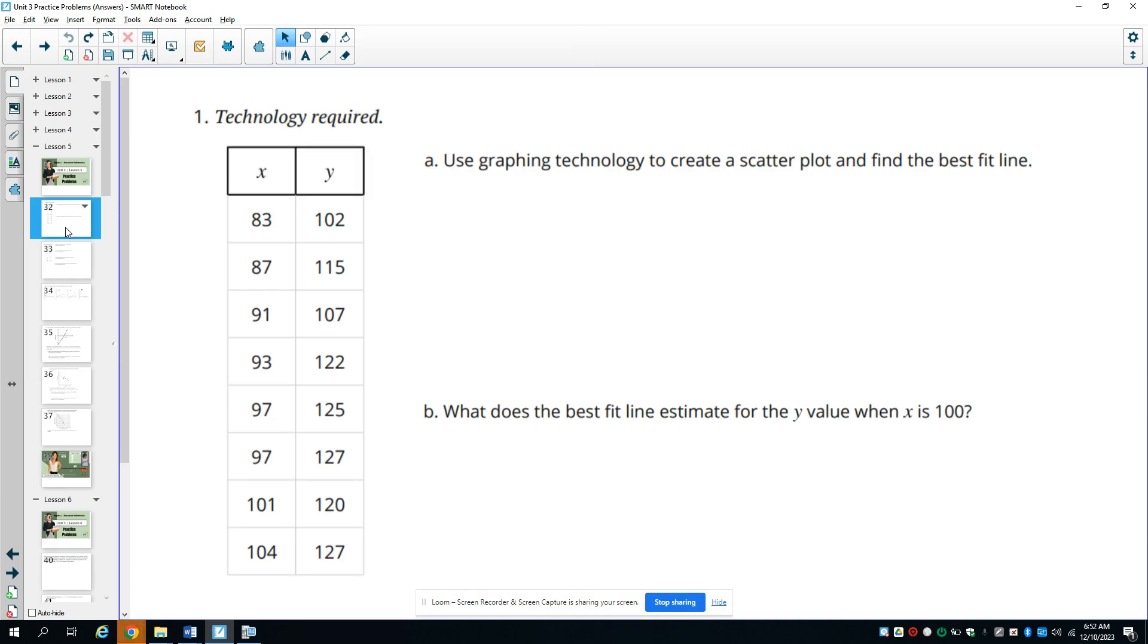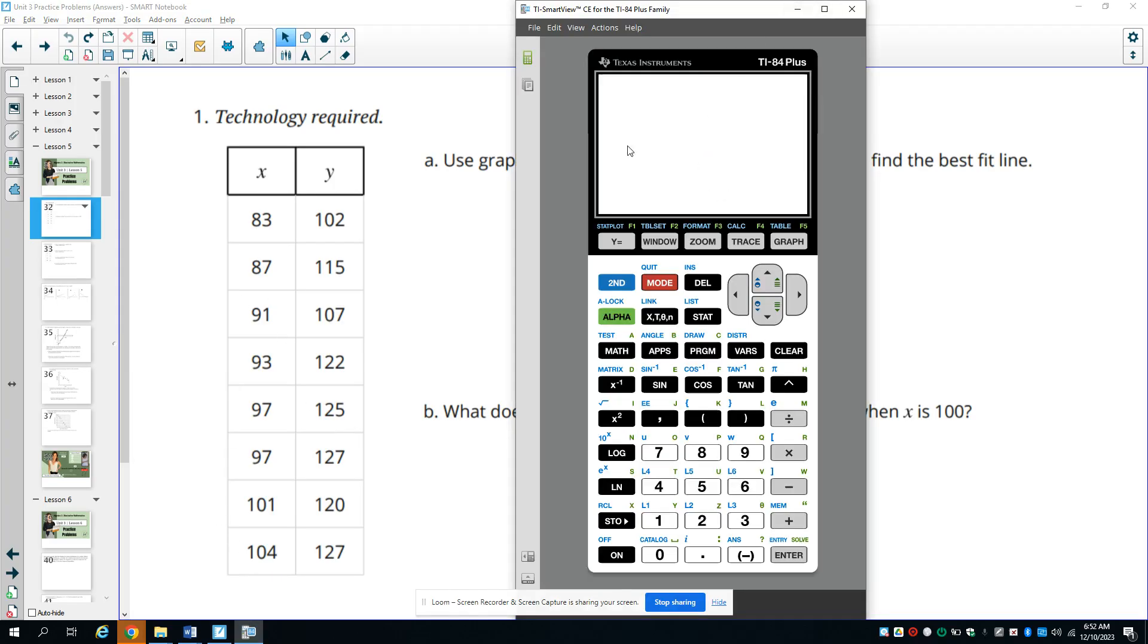Number one is going to have us use graphing technology to create a scatterplot and find a line of best fit. You can find websites that will do this for you if you don't have a graphing calculator. I'm going to use a graphing calculator to do this.